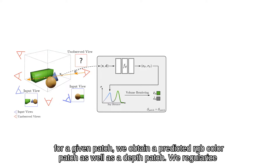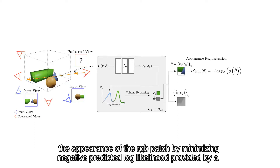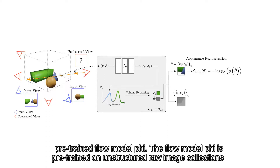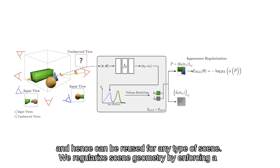Repeating this for all rays for a given patch, we obtain a predicted RGB color patch as well as a depth patch. We regularize the appearance of the RGB patch by minimizing the negative predicted log likelihood provided by a pre-trained flow model φ. The flow model φ is pre-trained on unstructured raw image collections and hence can be reused for any type of scene.